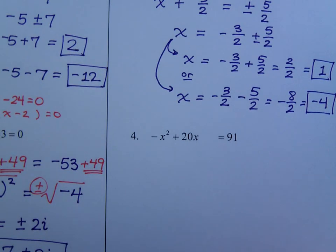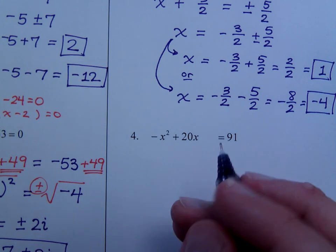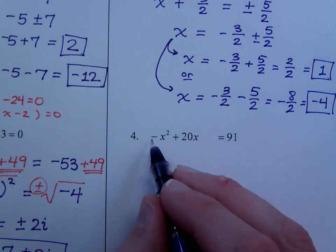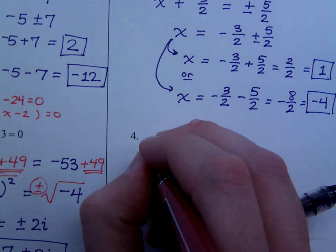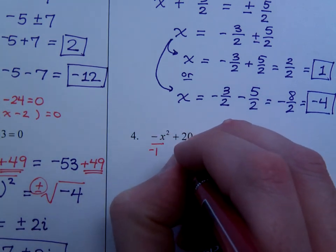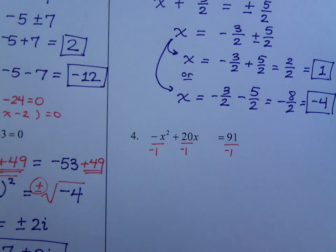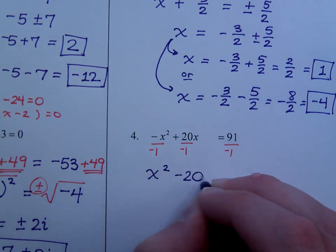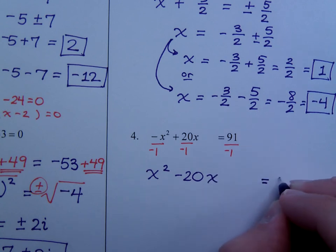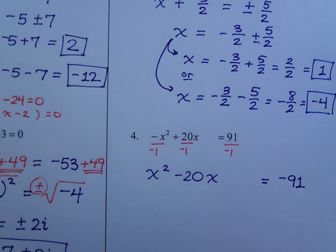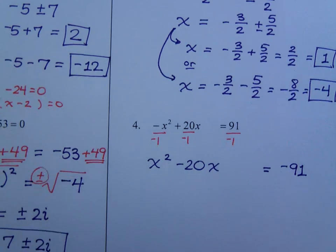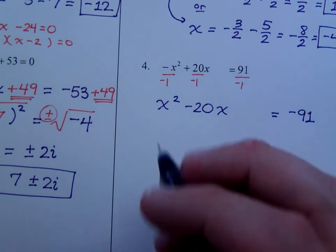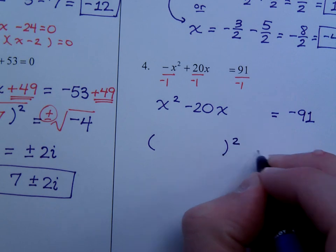Number 4. Well, number 4 already has the constant over here, but it's got the negative here. So, I'm going to fix this by dividing everything by negative 1. So, that's x squared minus 20x equals negative 91. So, I'm going to solve this by completing the square.